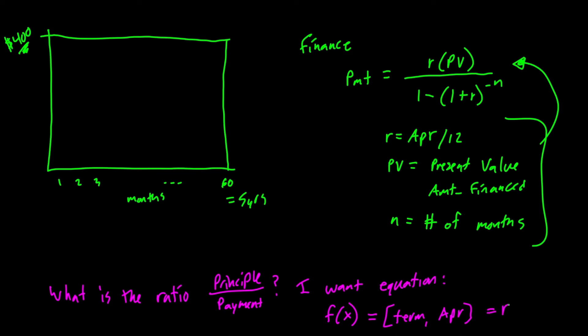So the problem I'm trying to solve here is going to be what is the ratio of principle to payment here. So I'll write it out. And I want an equation such that F of X, so some sort of equation here is going to take into it term and APR, and it's going to give me this ratio.